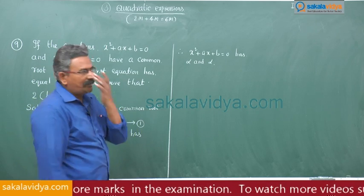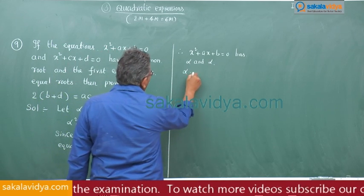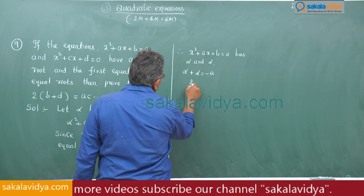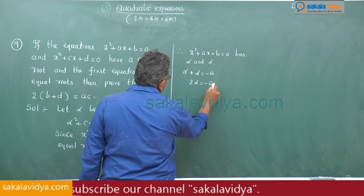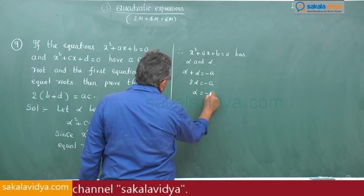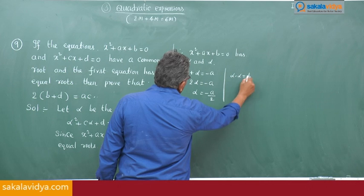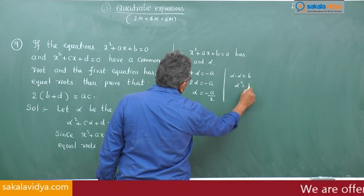First, sum of the roots: alpha plus alpha is equal to minus A by 1, which is minus A. So 2 alpha is equal to minus A, therefore alpha is equal to minus A by 2. Product: alpha into alpha equals B, so alpha square is equal to B.